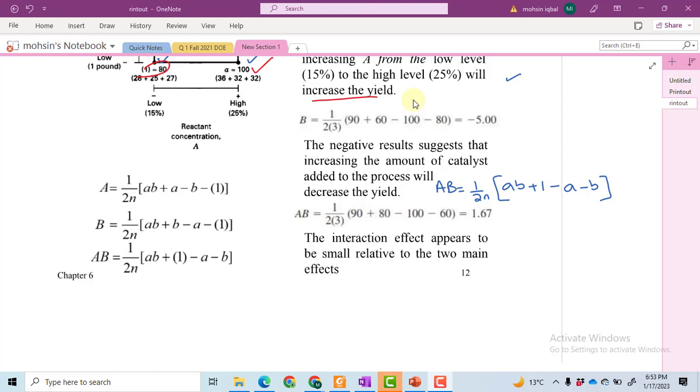Now we will find the interaction effect AB. In order to do so, repeat the same process and find the contrast initially. We have AB value 91 when A and B at low level, 80 when A equals 100 and B equals 60.